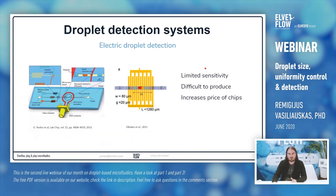Another method introduced is electrical droplet detection. You run your droplets over electrical contacts and detect them by physical or electrical parameters. However, you need to integrate electrical components into your chip, which increases the price and makes it more complicated. This is not an optical method.